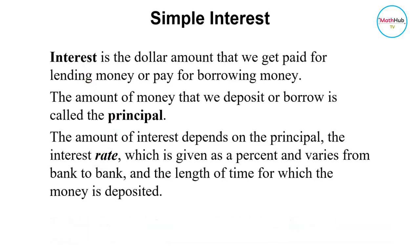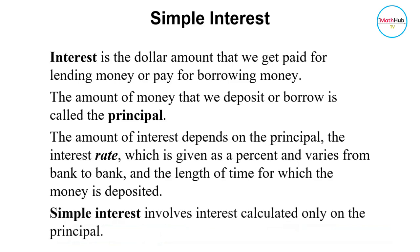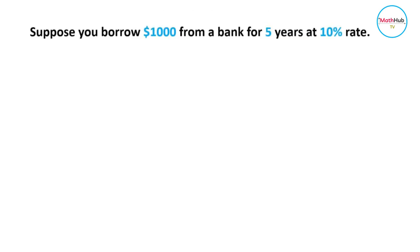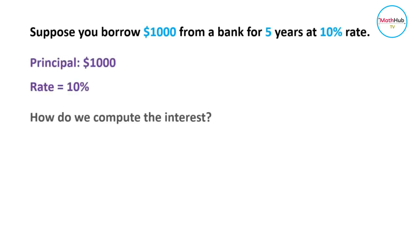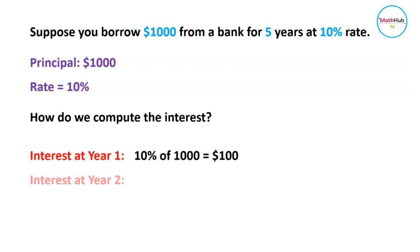When you say simple interest, this involves interest calculated only on the principal. For instance, you borrowed money from a bank for five years. If the rate is 10% and you borrowed $1,000, you would apply 10% to $1,000 for the first year, and for the second year, you apply 10% to $1,000 again.